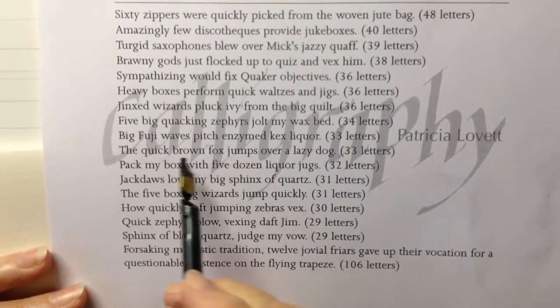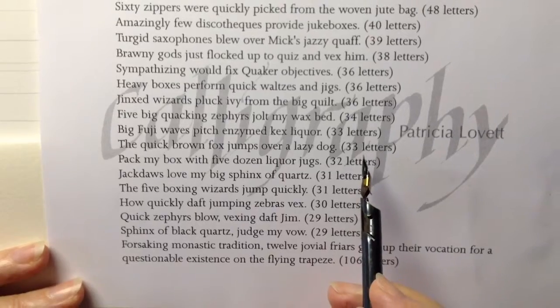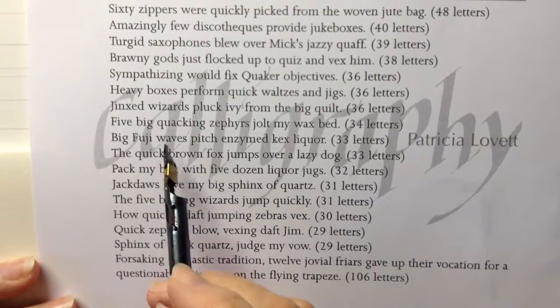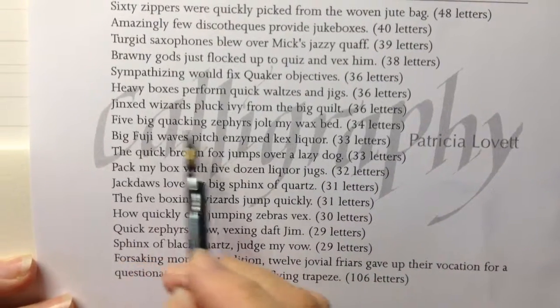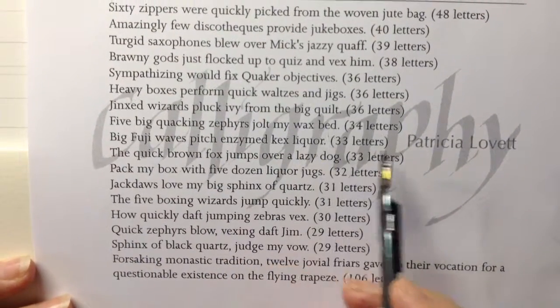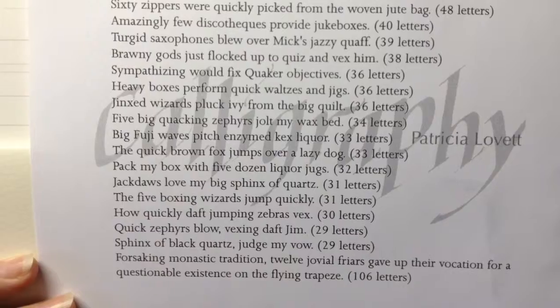So we know the quick brown fox jumps over the lazy dog, but you might not know that big Fuji waves pitch enzymed kex liquor, for example, or five big quacking zephyrs jolt my wax bed. These have all the letters of the alphabet in them.